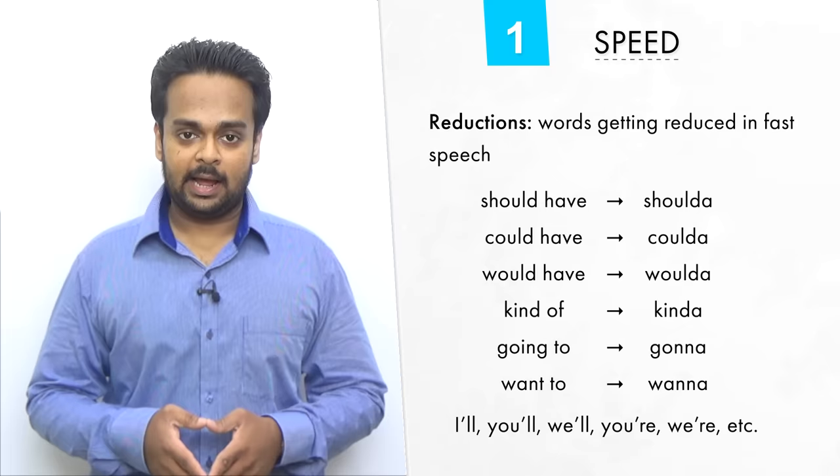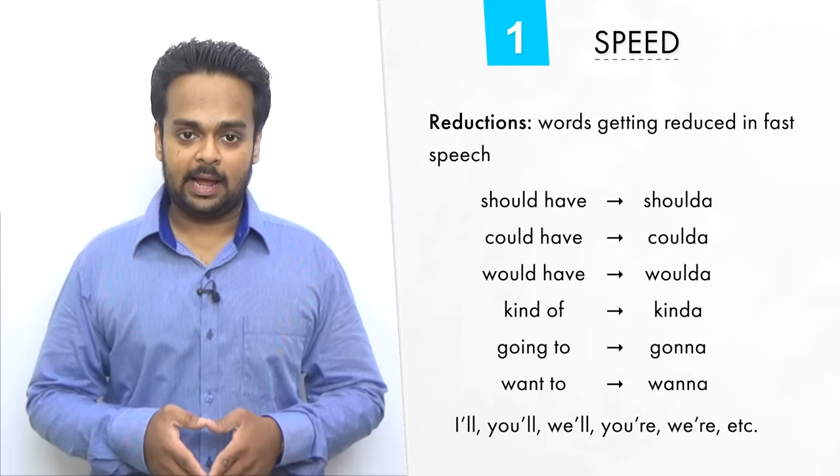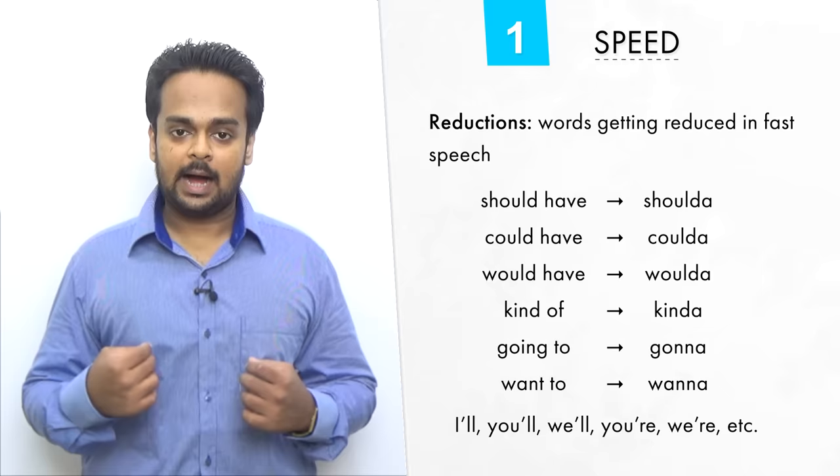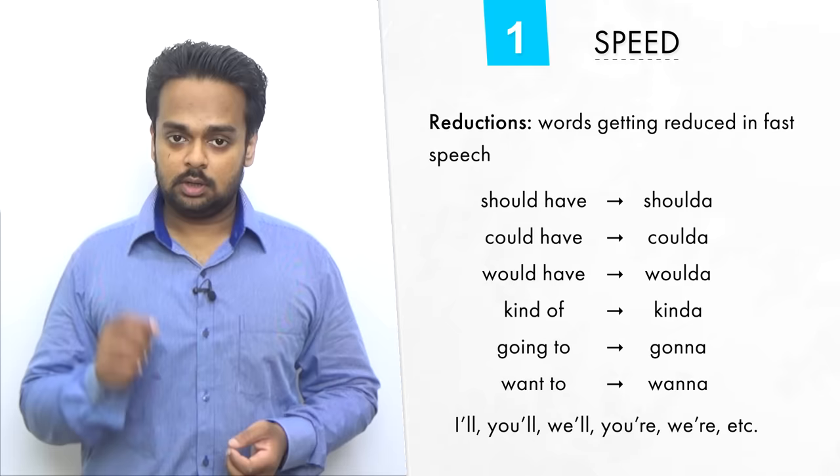And what happens as a result of that is reductions. That is, words get reduced in fast speech. For example, words like should have, could have and would have become shoulda, coulda and woulda. Kind of becomes kinda. Going to and want to get reduced to gonna and wanna. Then we have contractions like I'll, you'll, you're, we're, etc.